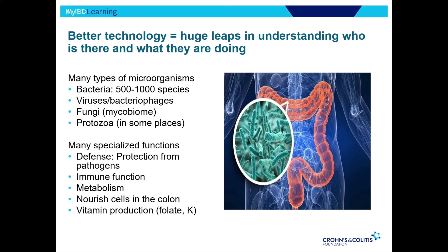They serve as a first line of defense, protecting you from foodborne illnesses and other pathogenic bacteria. There's a lot to do with immune function and the development of the immune system — kids may be more prone to atopic and allergic diseases as a result of early problems in the microbiome. They nourish the cells of the colon: bacteria break down fibrous products in our stool, making short-chain fatty acids, which are the main food source for colon cells. They also produce vitamins, particularly vitamin K and folic acid.